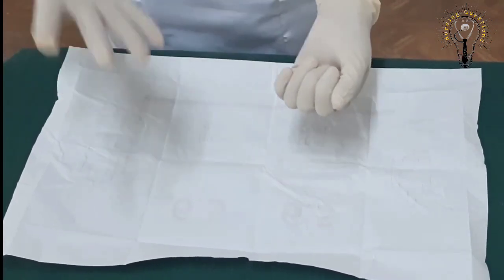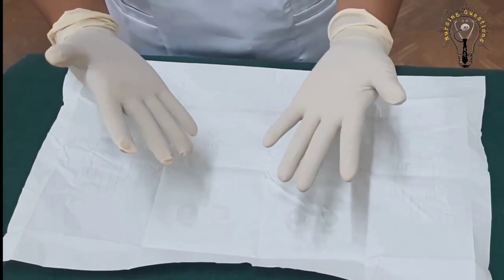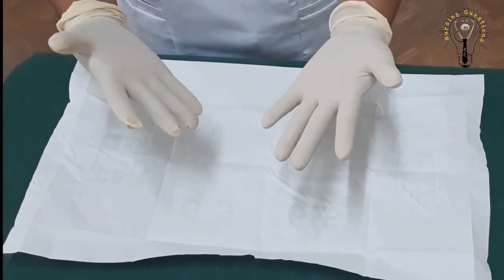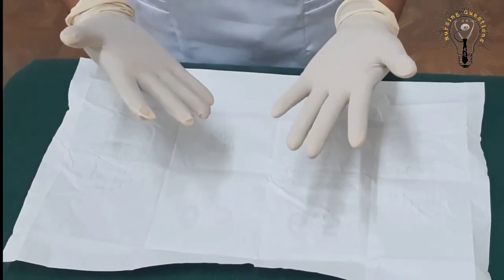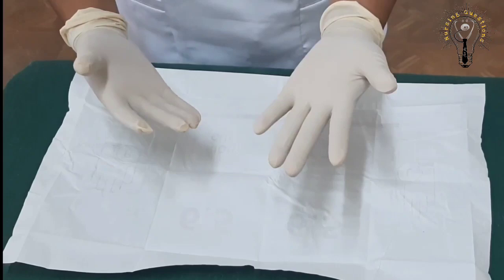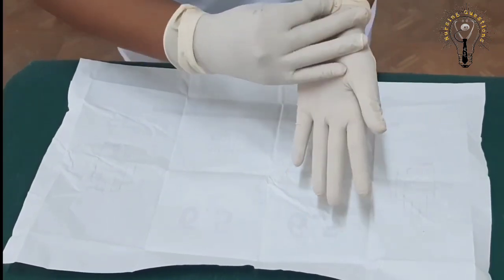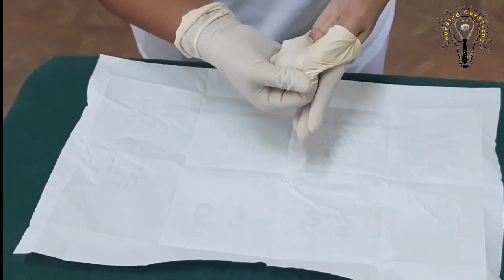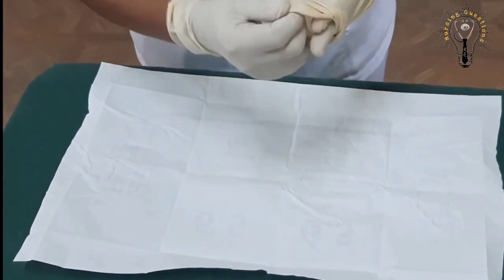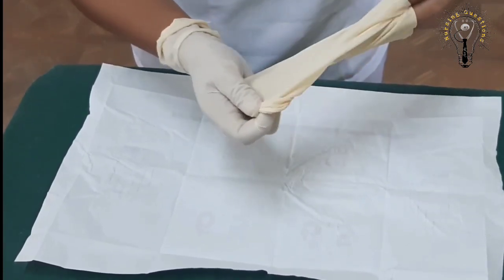Using your dominant gloved hand, grasp the other glove and remove by inserting it, keeping the contaminated area on the inside. Continue to hold onto the glove. You grasp the cuff and then the inside surface so the contaminated part is already enclosed.